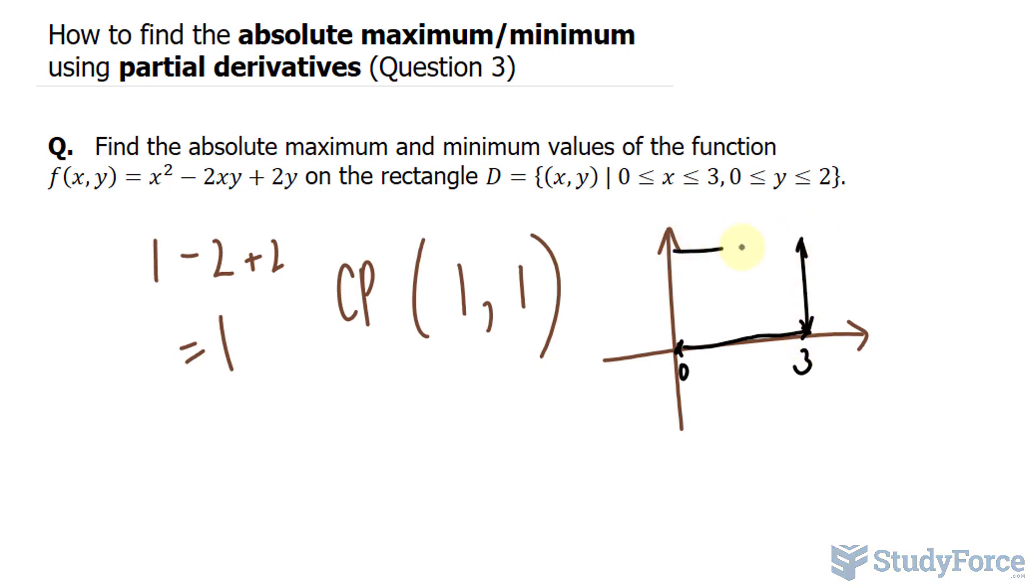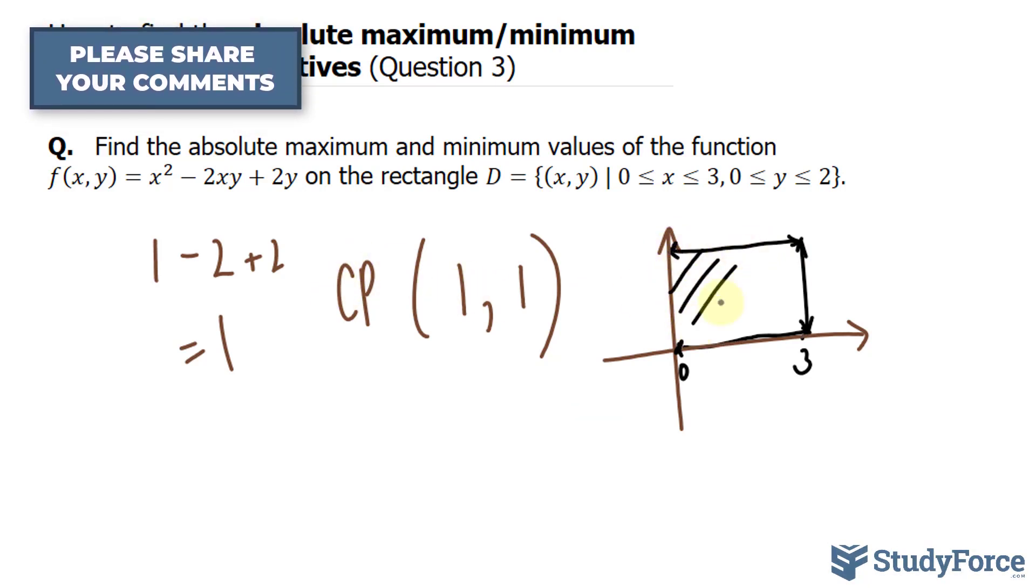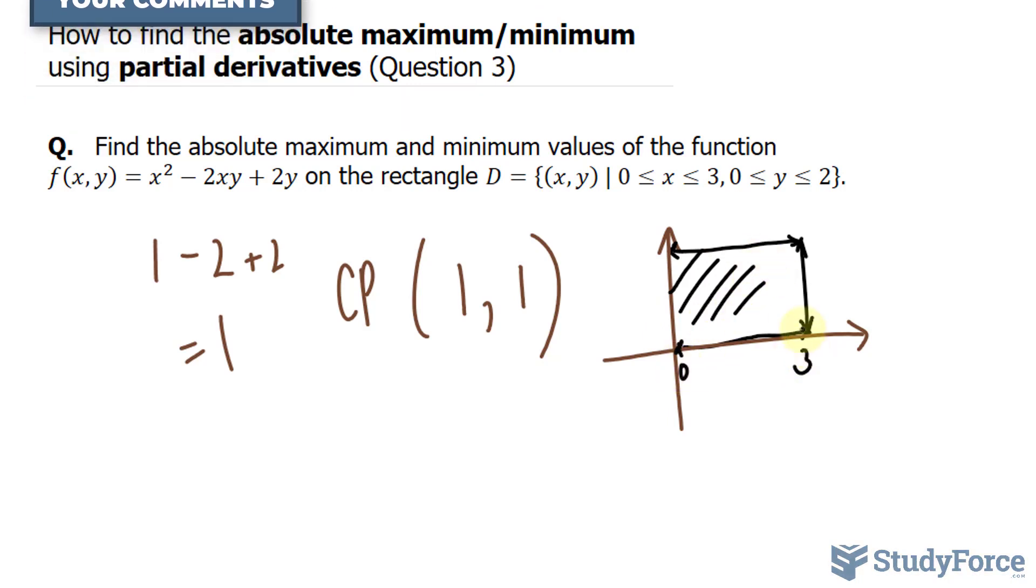So you have a rectangle where you can find your absolute maximum and minimum. Given that our critical point is within this range between 0 and 3 and 0 and 2, you're allowed to evaluate the function at this point, and that's why we did. So technically, at this point, the maximum is at 1, and it happens at the critical point 1 and 1.